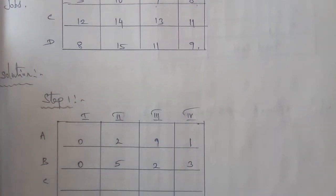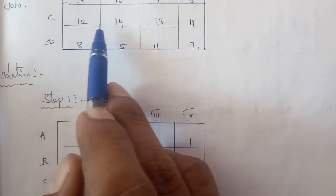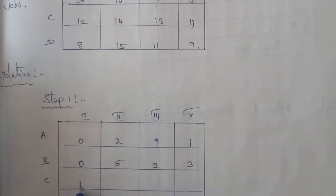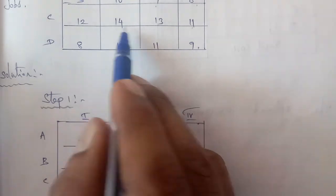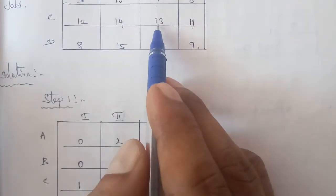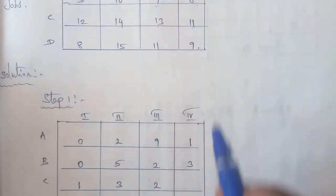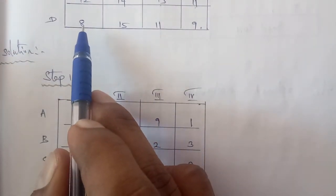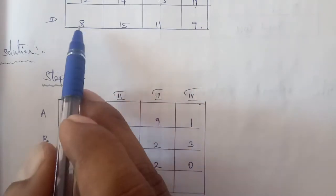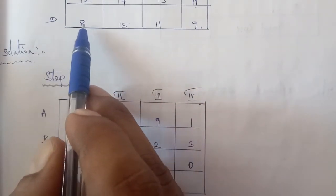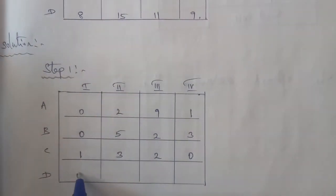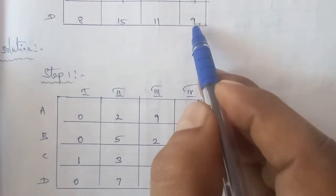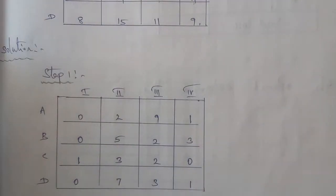Third row: the least number is 11. So: 12 minus 11 equals 1; 14 minus 11 equals 3; 13 minus 11 equals 2; 11 minus 11 equals 0. Fourth row: least number is 8. So: 8 minus 8 equals 0; 15 minus 8 equals 7; 11 minus 8 equals 3; 9 minus 8 equals 1.